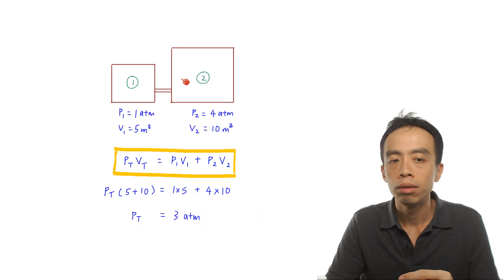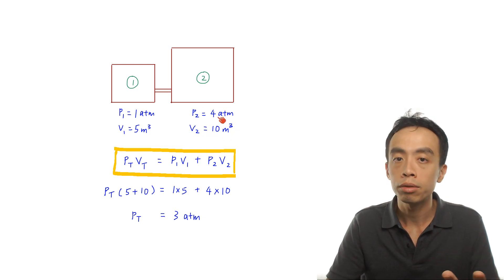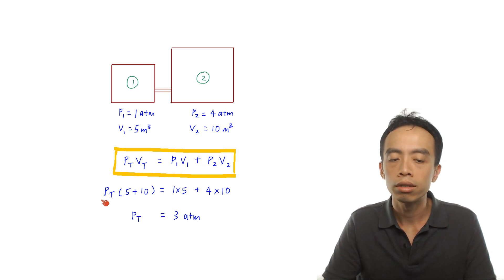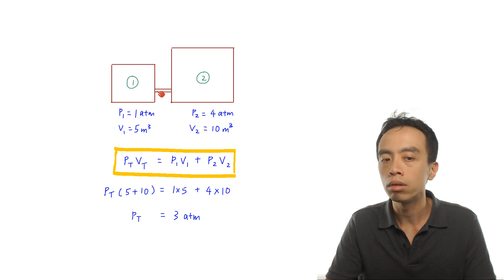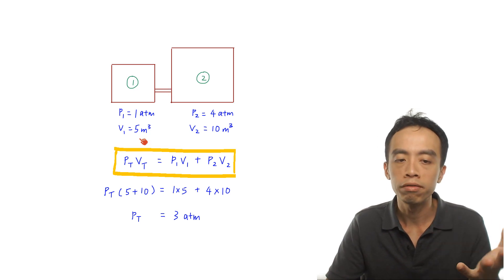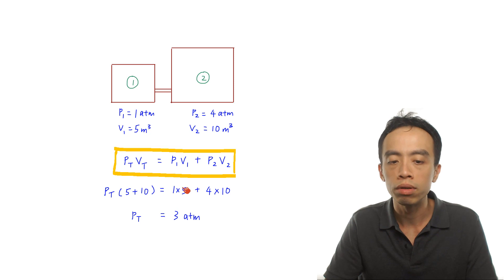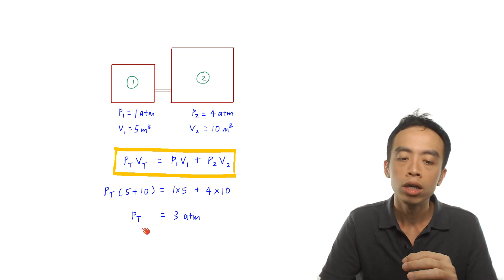Back to the worked example: if pressure 1 is 1 atmosphere, volume 1 is 5 meter cubed, pressure 2 is 4 atmosphere, and volume 2 is 10 meter cubed, then using P_total × V_total = P1V1 + P2V2, the total volume is 5 plus 10 = 15 meter cubed. Substituting: P_total × 15 = (1 × 5) + (4 × 10) = 5 + 40 = 45. Dividing both sides by 15, the total pressure equals 3 atmosphere.